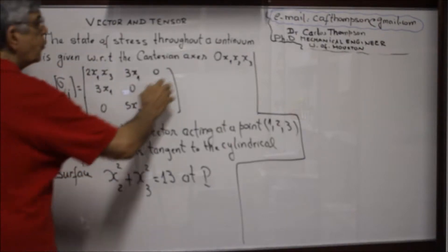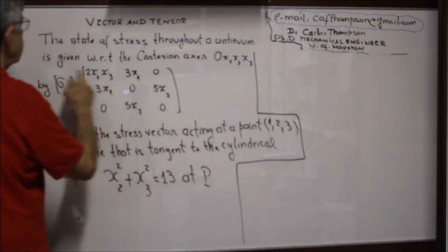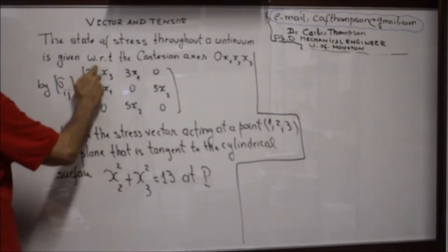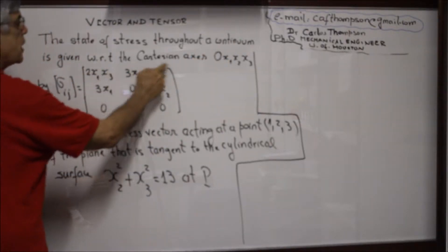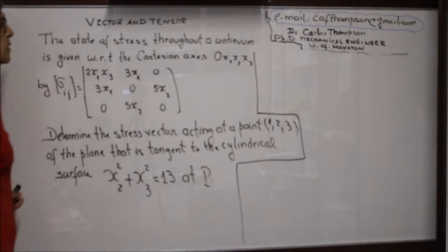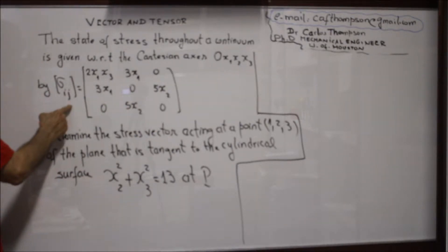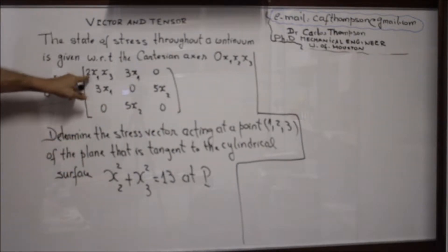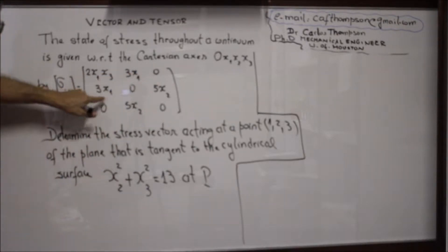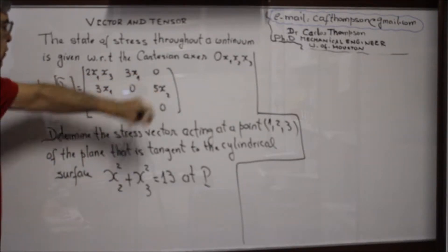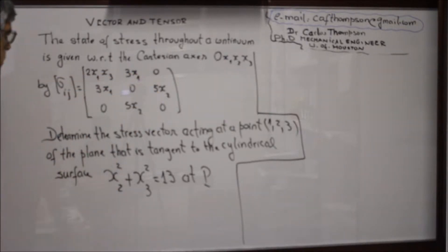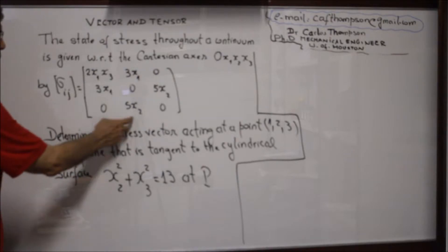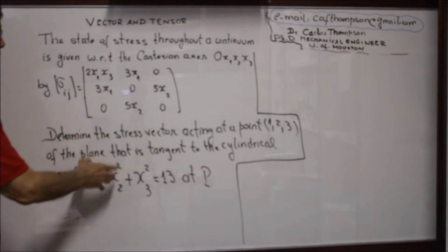A state of stress throughout a continuum is given with respect to the Cartesian coordinates X1, X2, X3 by sigma_ij, which is the matrix: [2X1·X3, 3X1, 0; 3X1, 0, 5X2; 0, 5X2, 0].